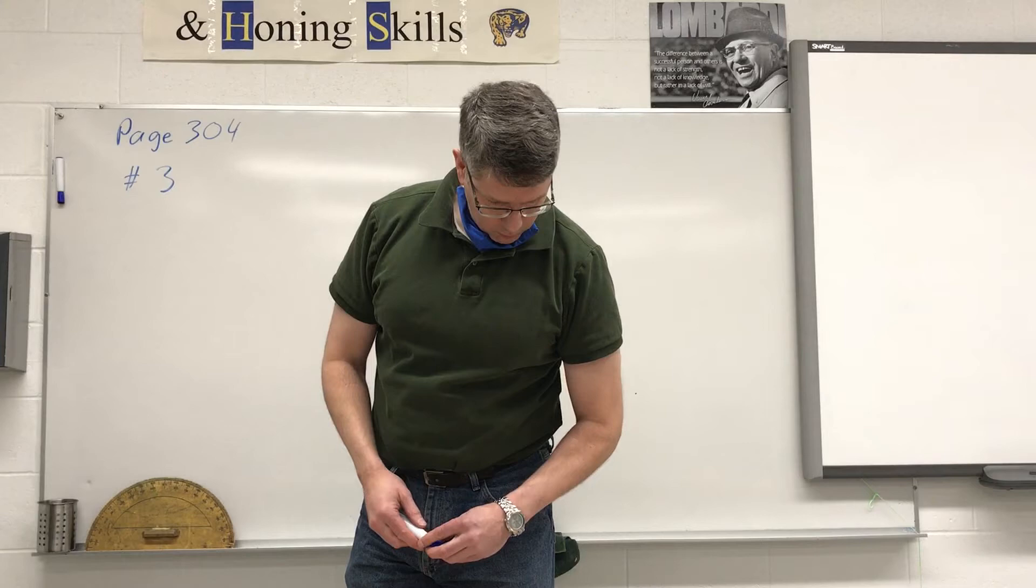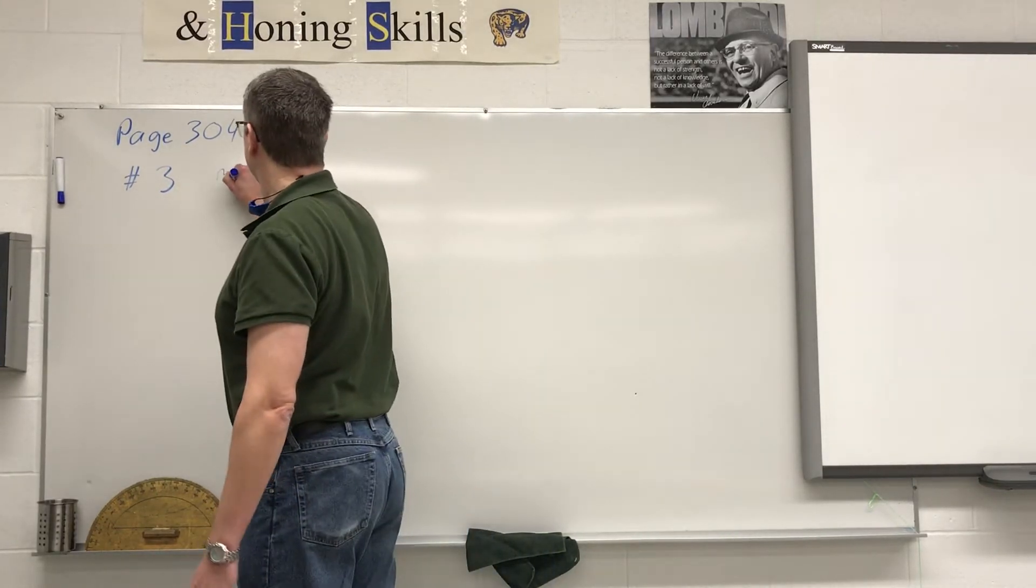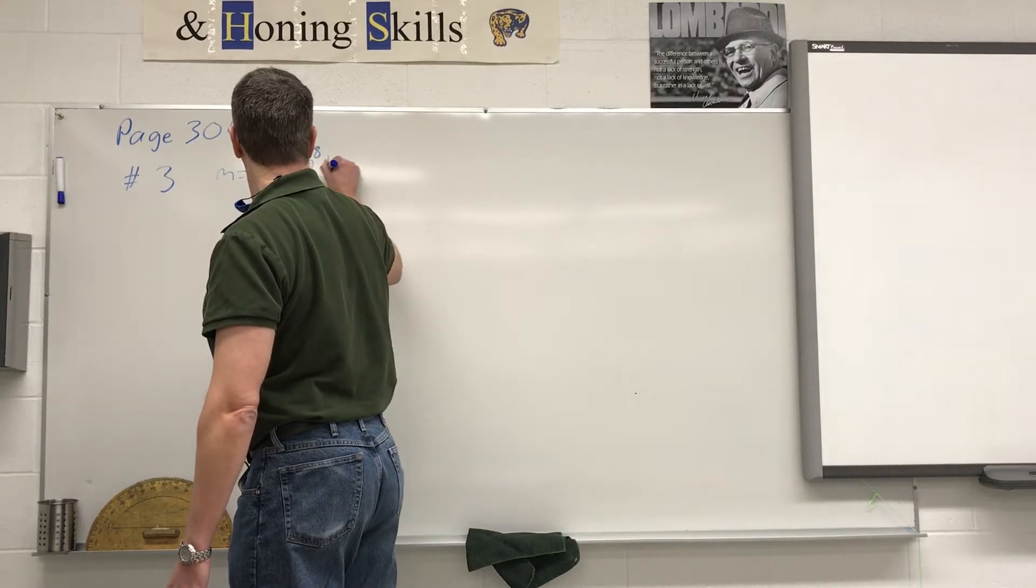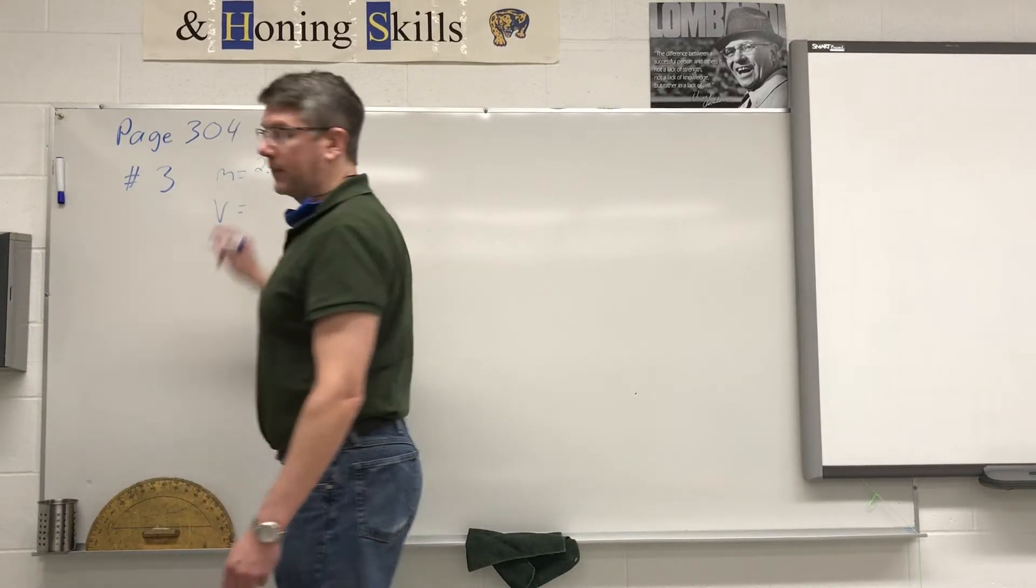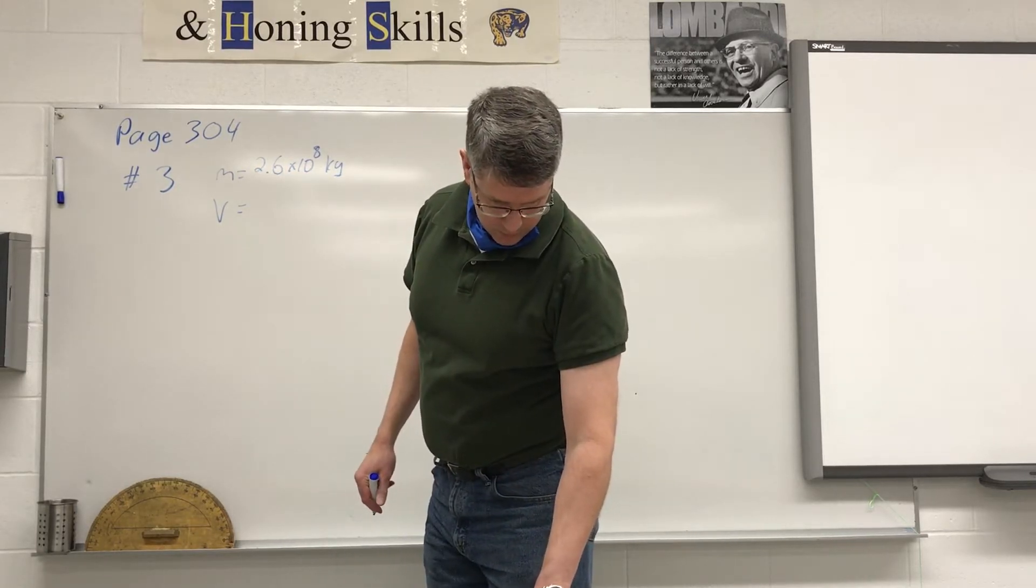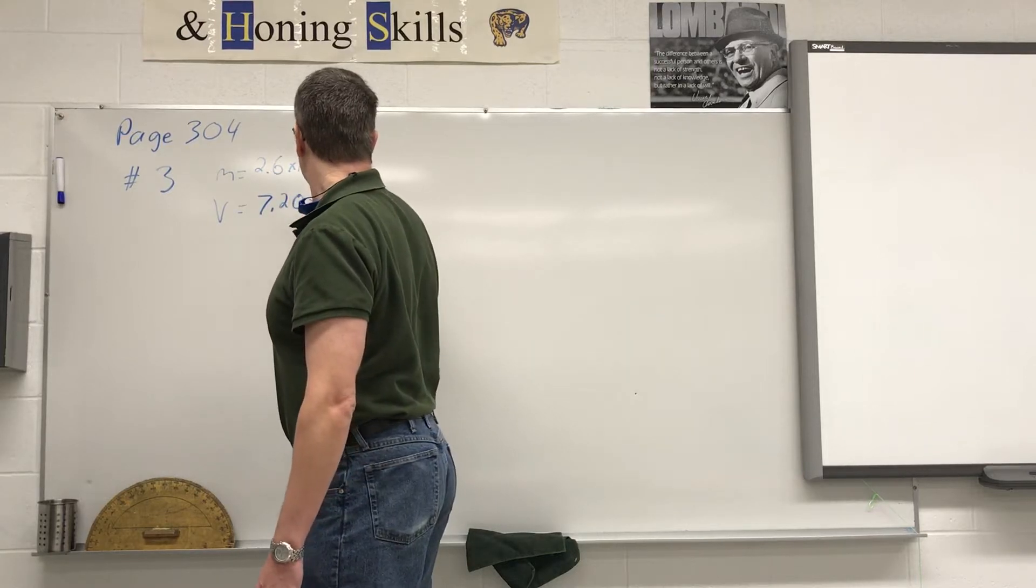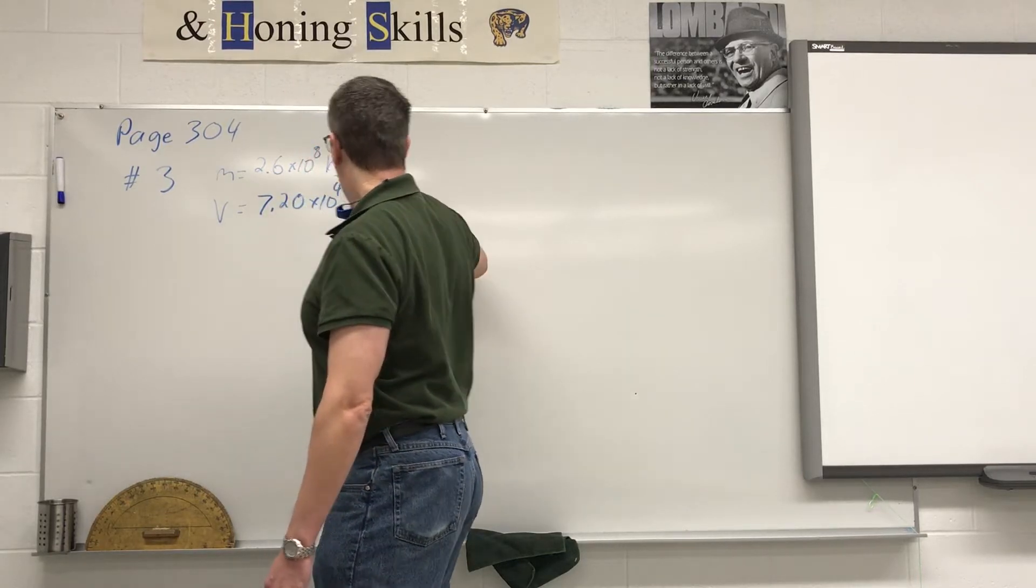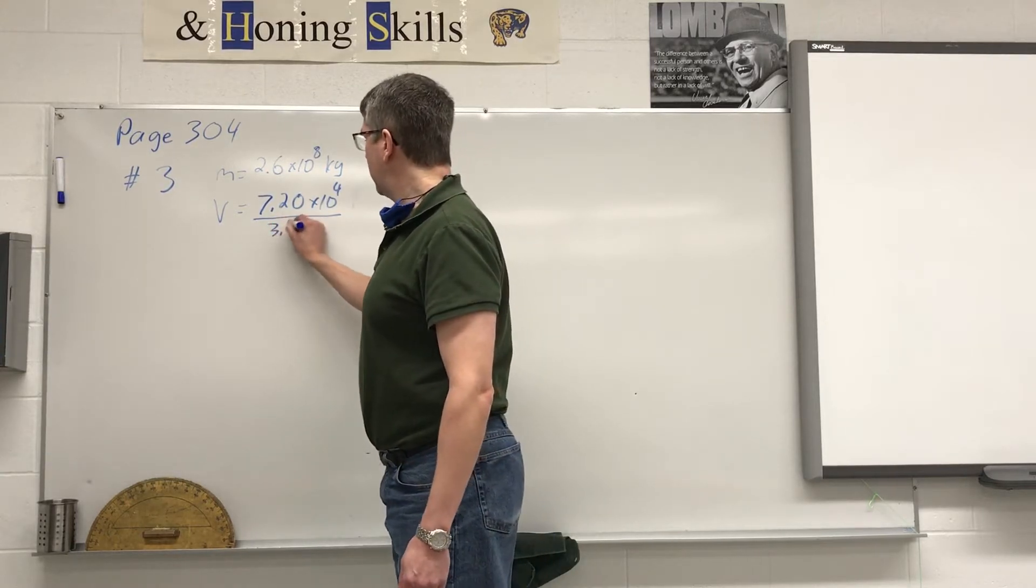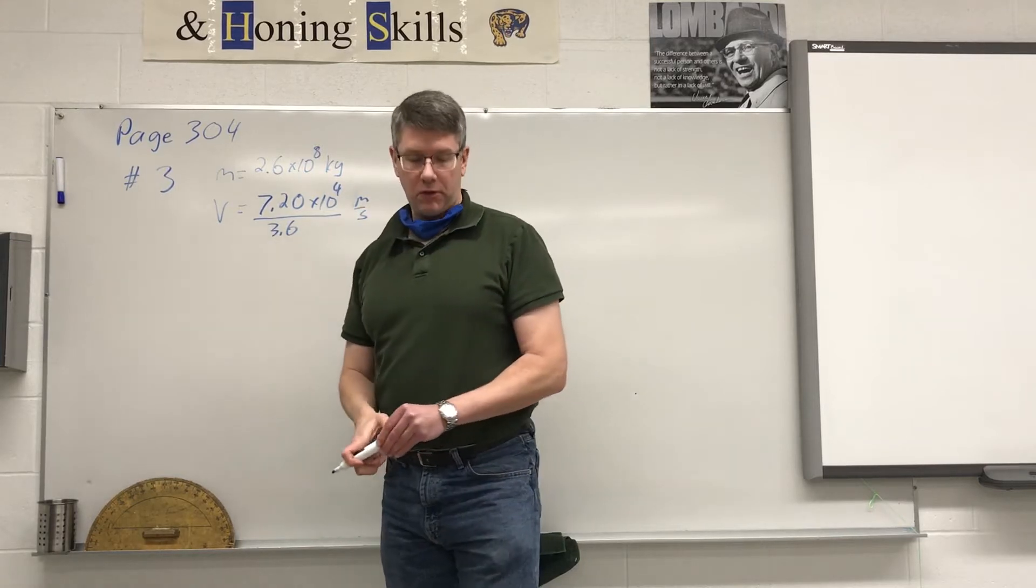So we have a mass of 2.6 times 10 to the power of 8 kilograms and a velocity of 7.20 times 10 to the power of 4. Now we don't want the value in kilometers per hour, so if we divide by 3.6 we will convert that from kilometers per hour into meters per second.